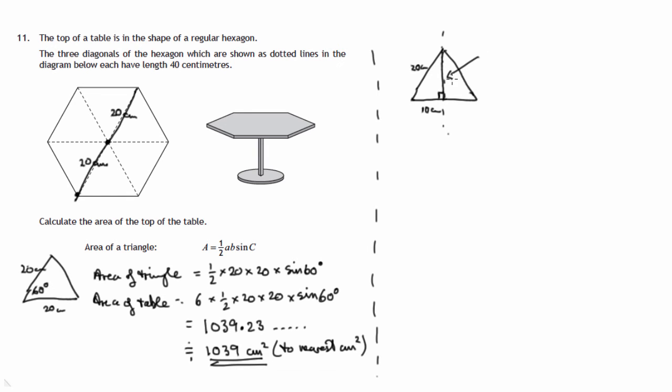And Pythagoras would tell us that this height of the triangle is the square root of 20 squared, and that's 20 squared, and it's not the hypotenuse, there's the hypotenuse there, so it's a subtraction. 20 squared minus 10 squared. So that's 400 minus 100. That's the square root of 300.